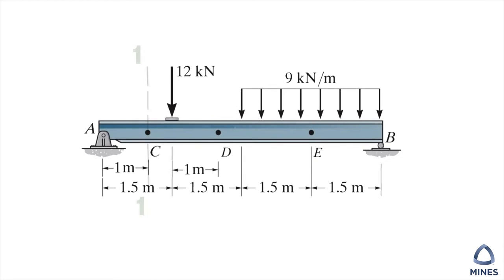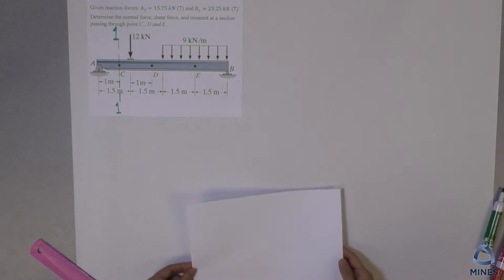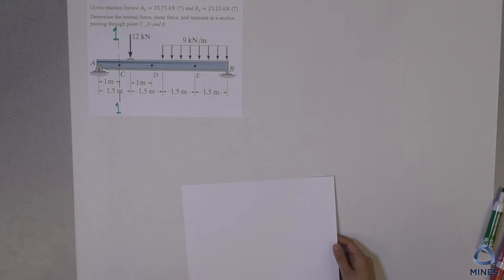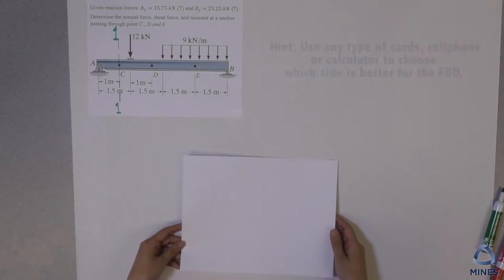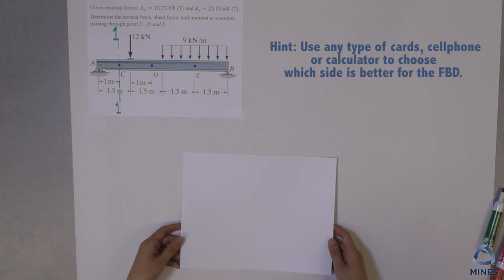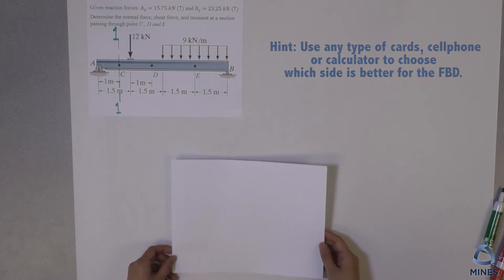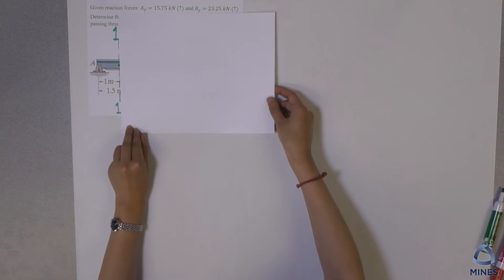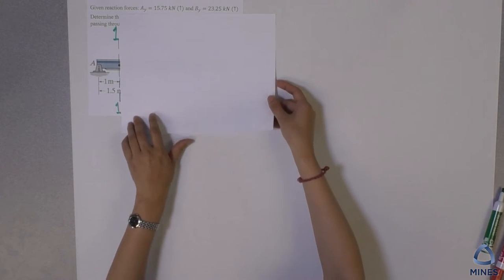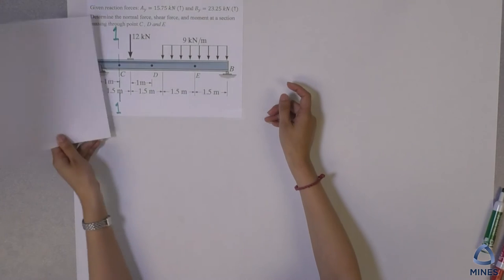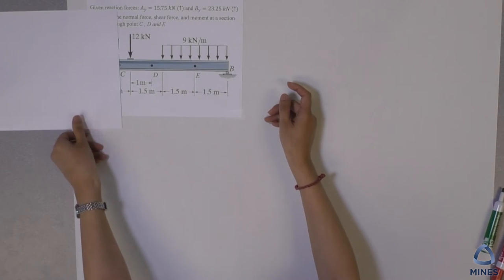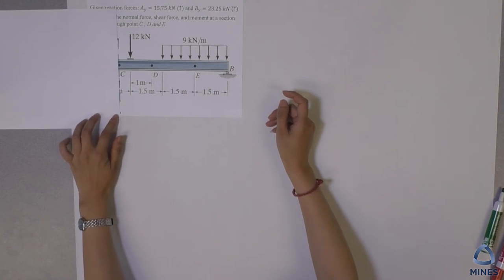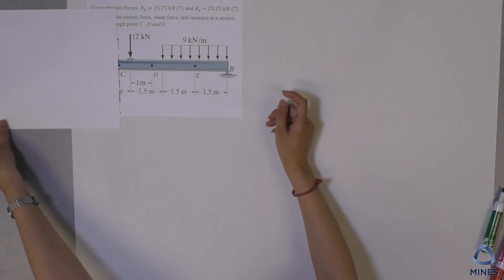I highly recommend you to use cards — credit cards, business cards, or your calculator, or your cell phone — to help you make a decision which side you want to pick as your FBD. You can choose this side as your FBD, or you can flip your card and choose another side. Do you have a decision now which side you want to pick as your FBD?